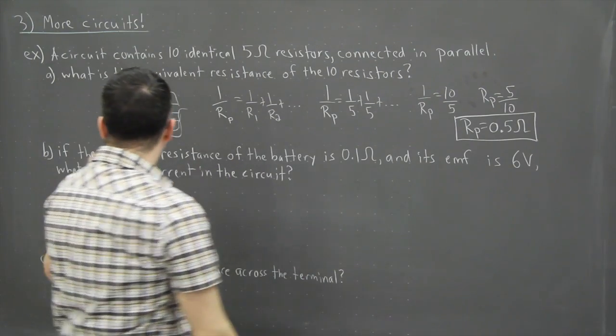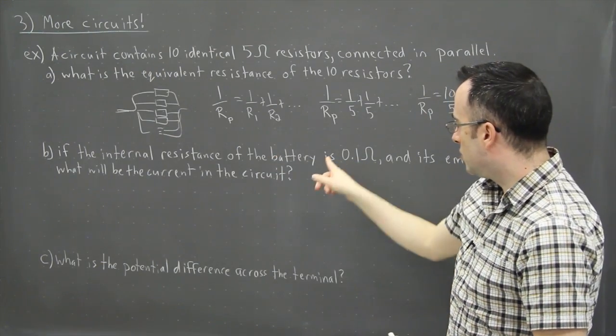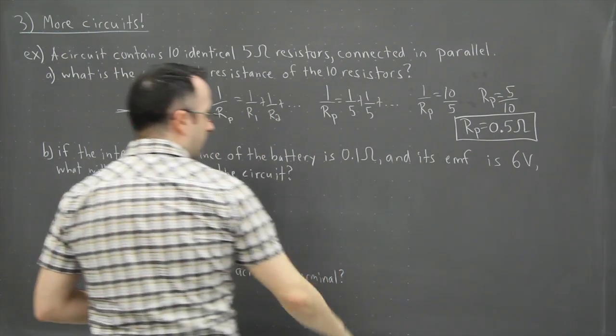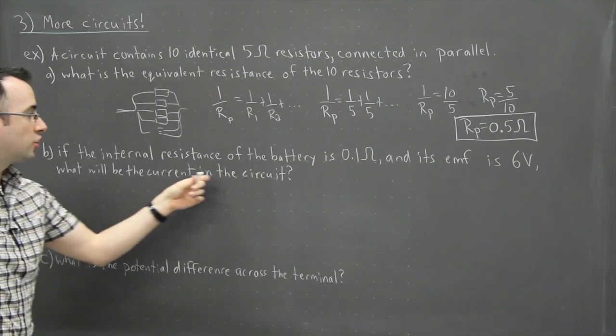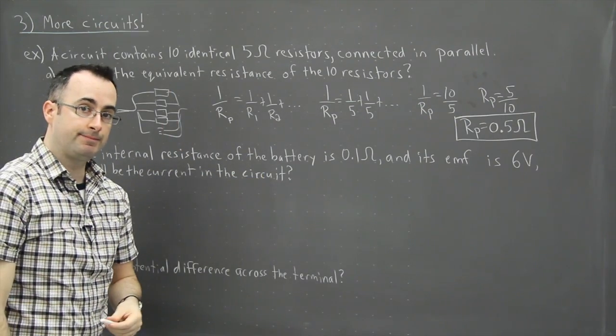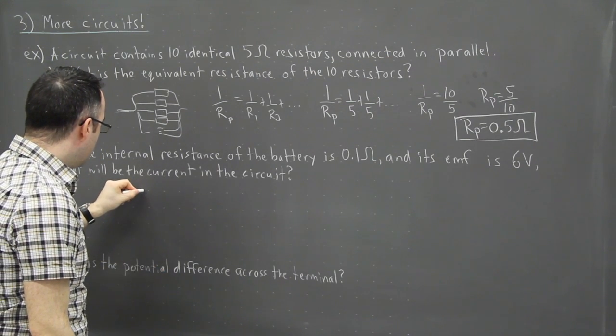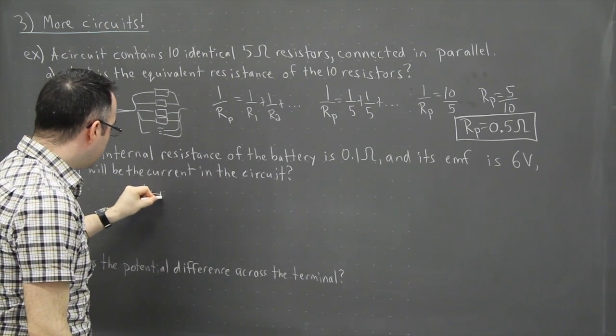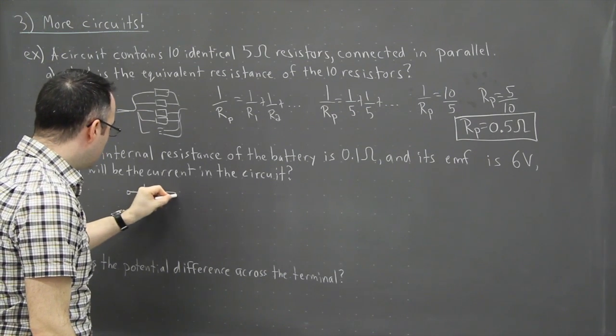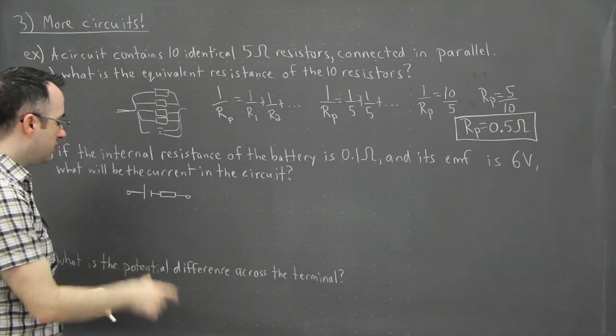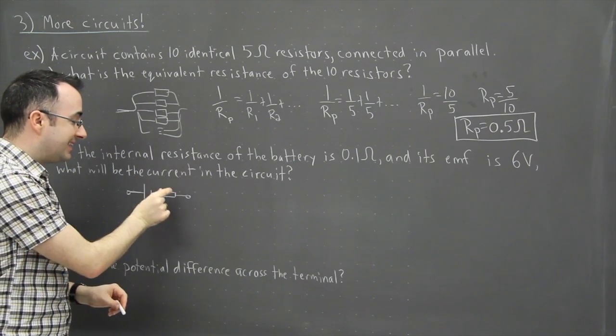So let's look at the second part now. Now we have an internal resistance of the battery. And we're told it's 0.1 ohms. And then we know that its EMF is 6 volts. And the question is, what's the current in the circuit? Well here I think it helps to draw the circuit out. So I'm going to draw it with a little battery, but I'm going to include its internal resistance. Like we've seen before, I'm going to draw it like this here with the terminals. So the battery is going to be represented by this, a battery plus a little resistor.